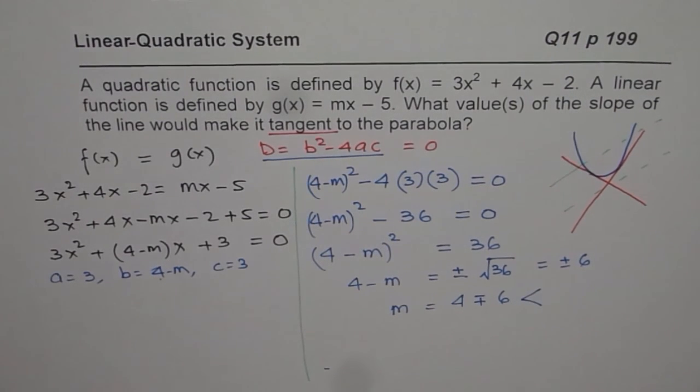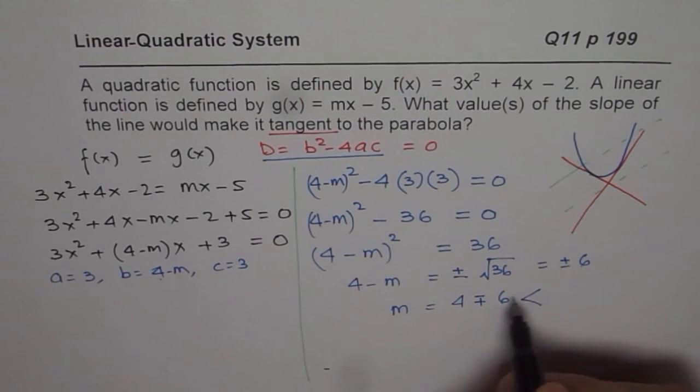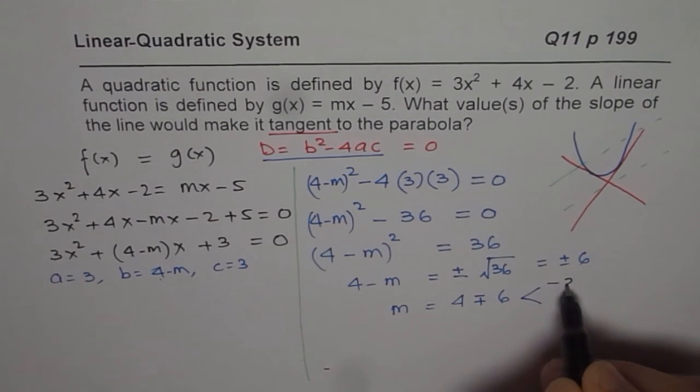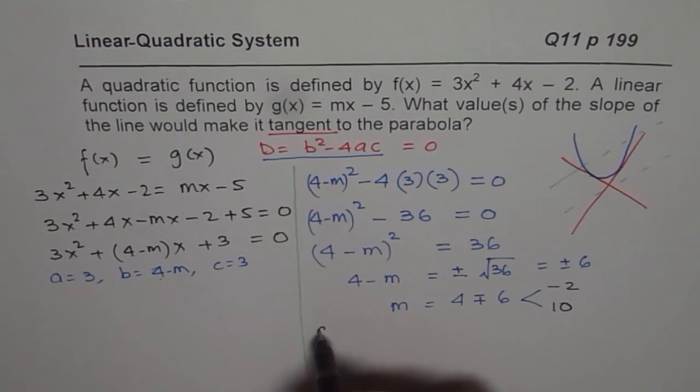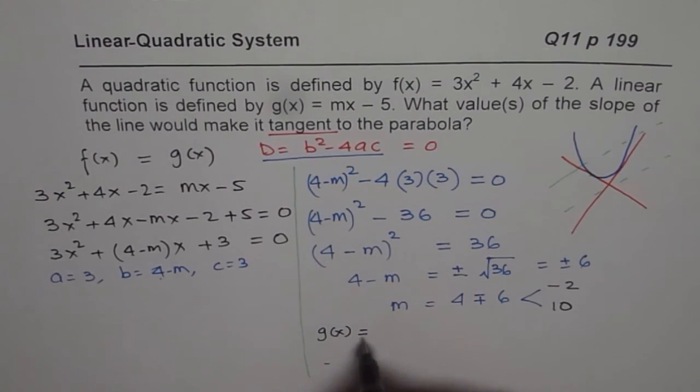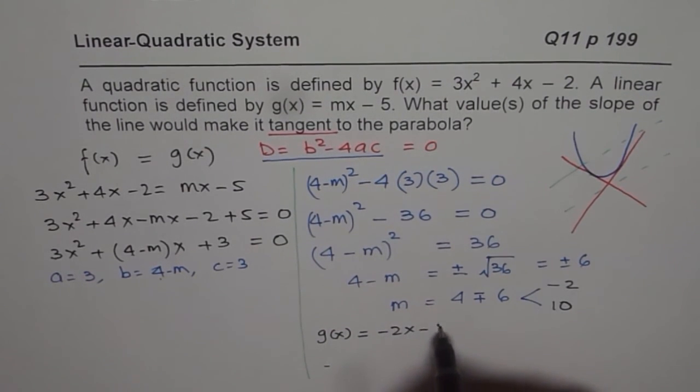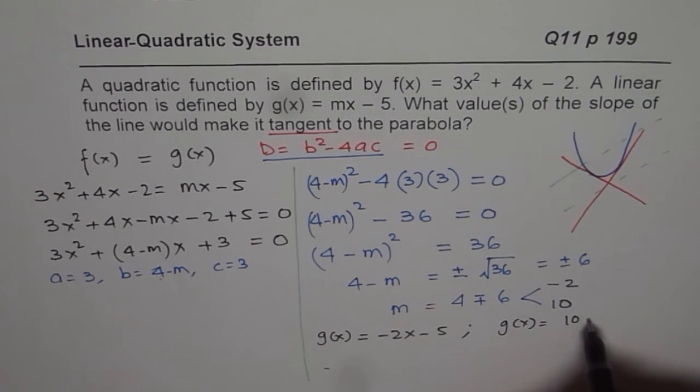So that gives us two possible solutions and these are, when I say 4 minus 6, I get the solution as minus 2. 4 plus 6 gives me 10. Do you get it? So these two equations. So my equations now are g(x) could be equal to, if I take minus 2, I get minus 2x minus 5 or g(x) could be equal to 10x minus 5, you get the idea?